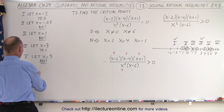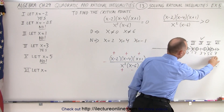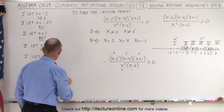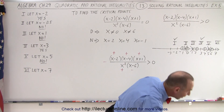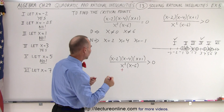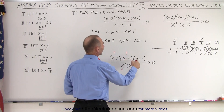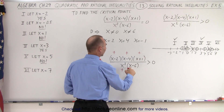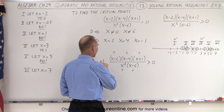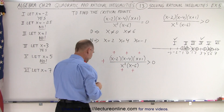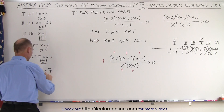Finally, region number six — we let x equal seven, a number greater than six. Seven minus two is five — positive. Seven minus four is three — positive. Seven plus one is positive. Seven minus six is one — positive. Everything is positive, so the whole fraction is positive, meaning bigger than zero. That region does satisfy the inequality. Yes.